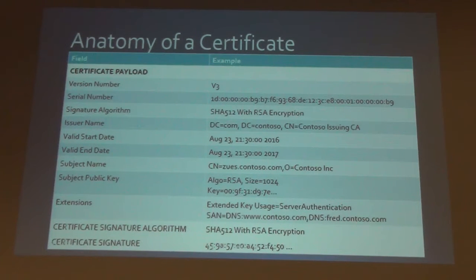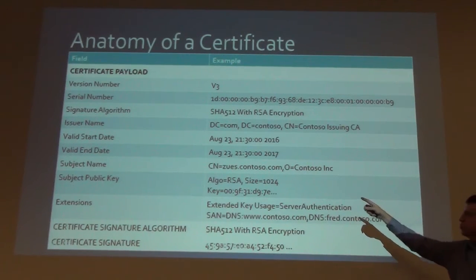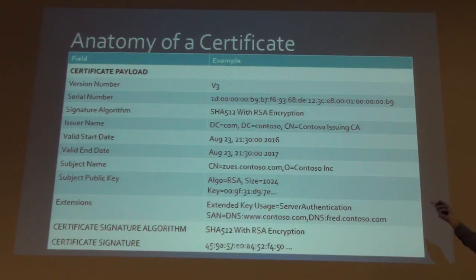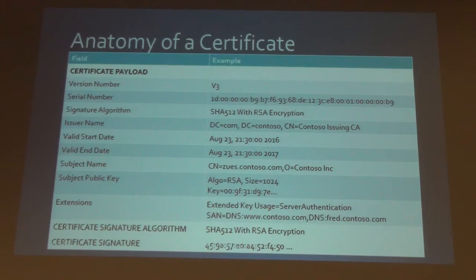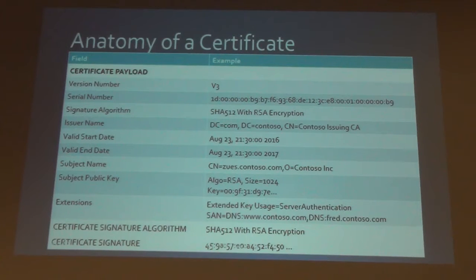The subject name is what the certificate is actually for. Here the common name is Zeus.Contoso.com and the organization is Contoso Inc. So this certificate is for a computer called Zeus.Contoso.com — that's what identifies this certificate. It would be placed on the Zeus.Contoso.com server, and that's the identity of the certificate.